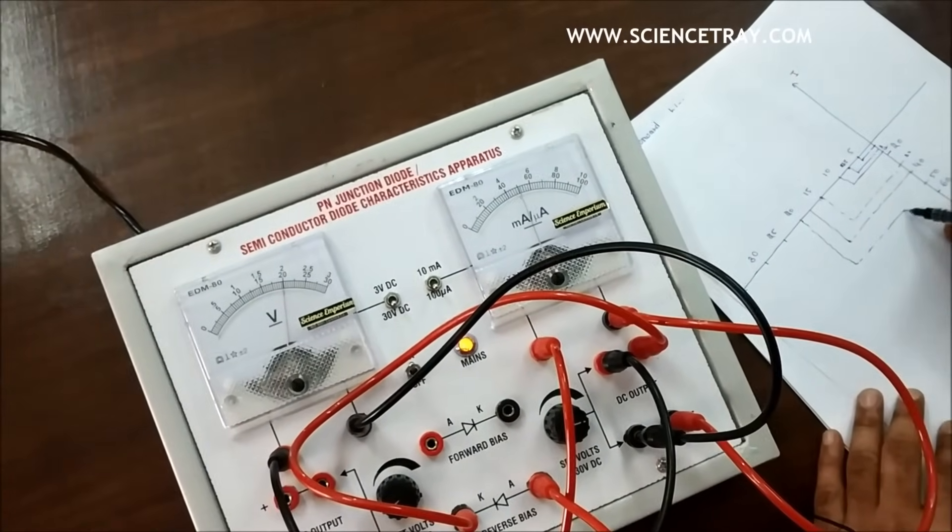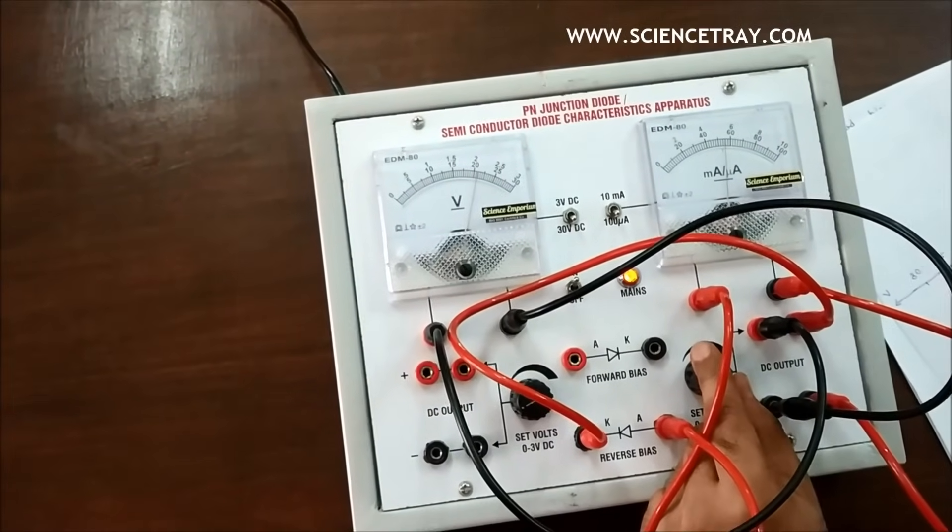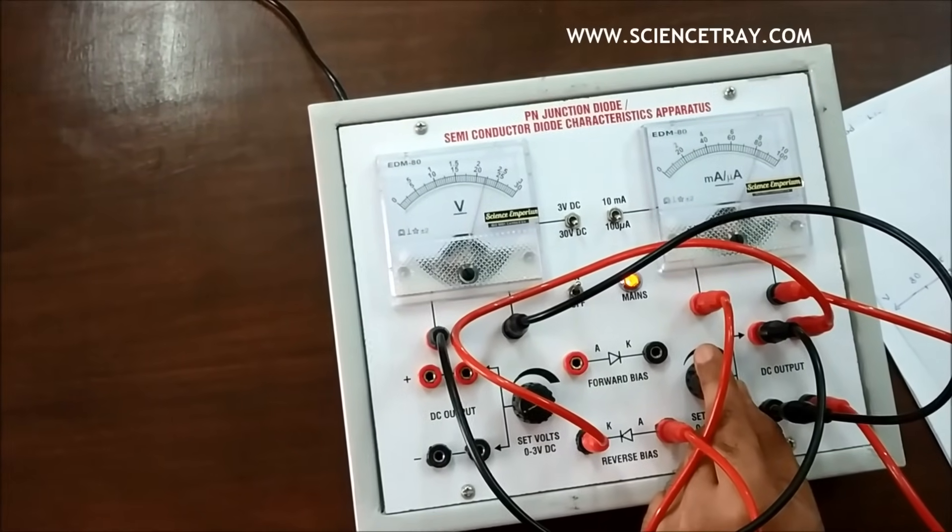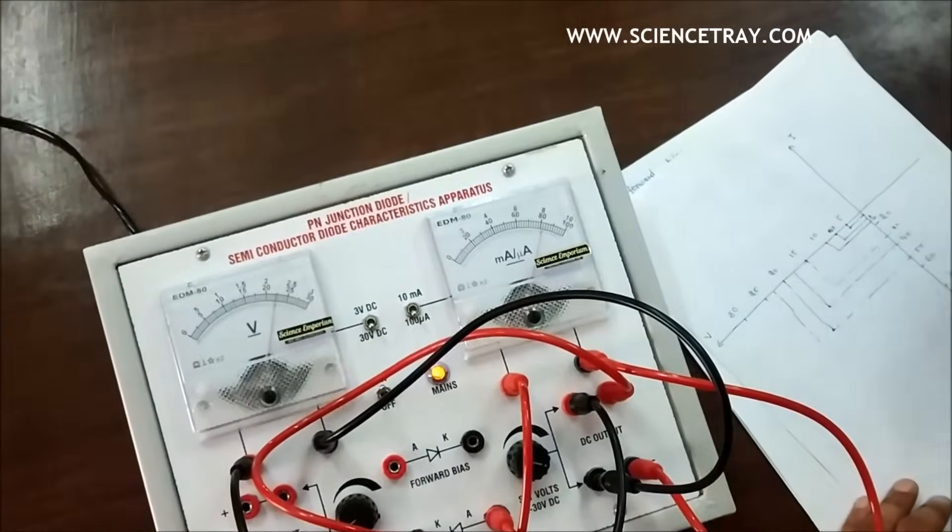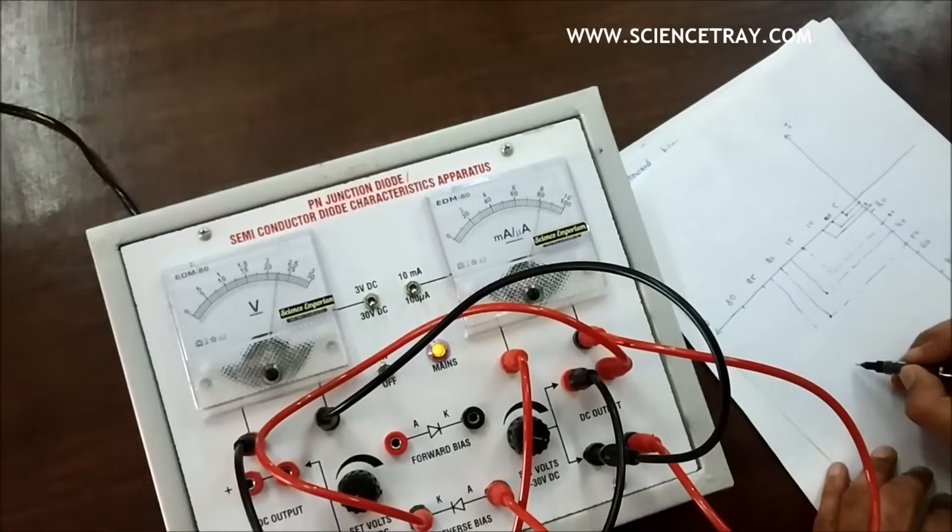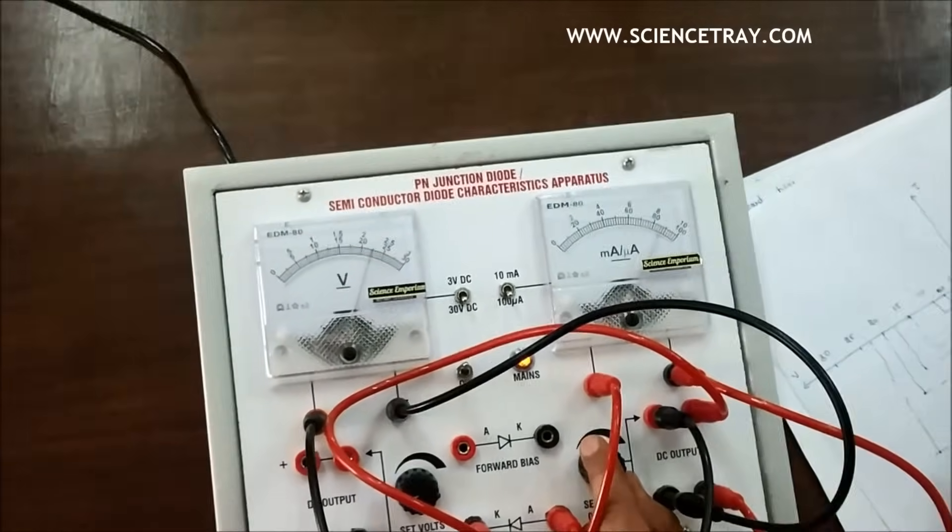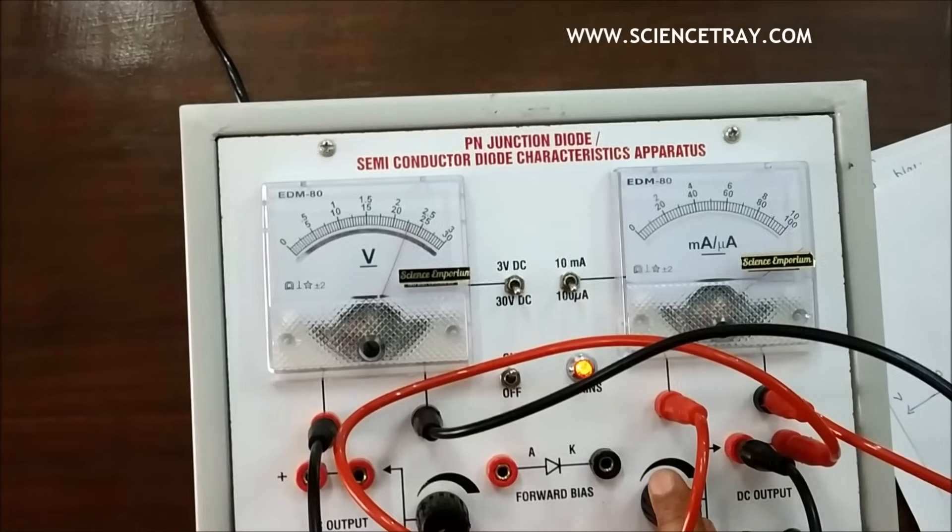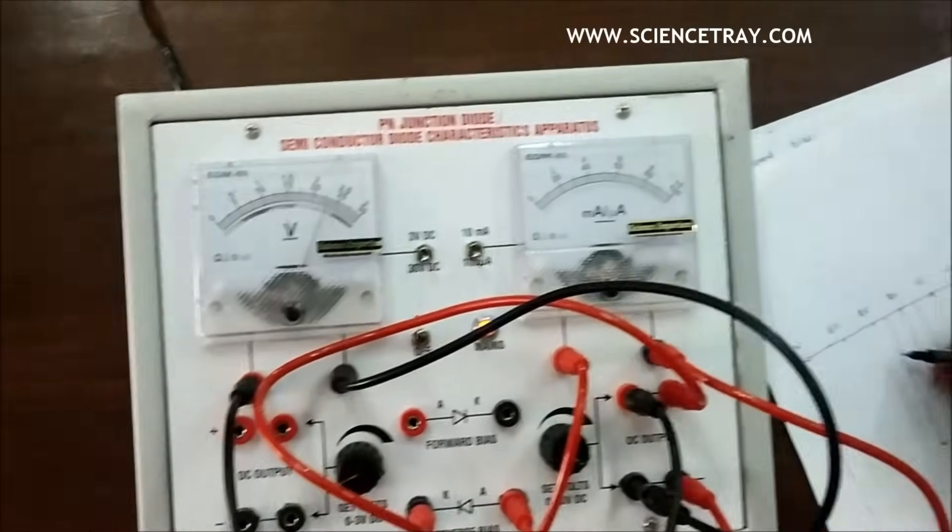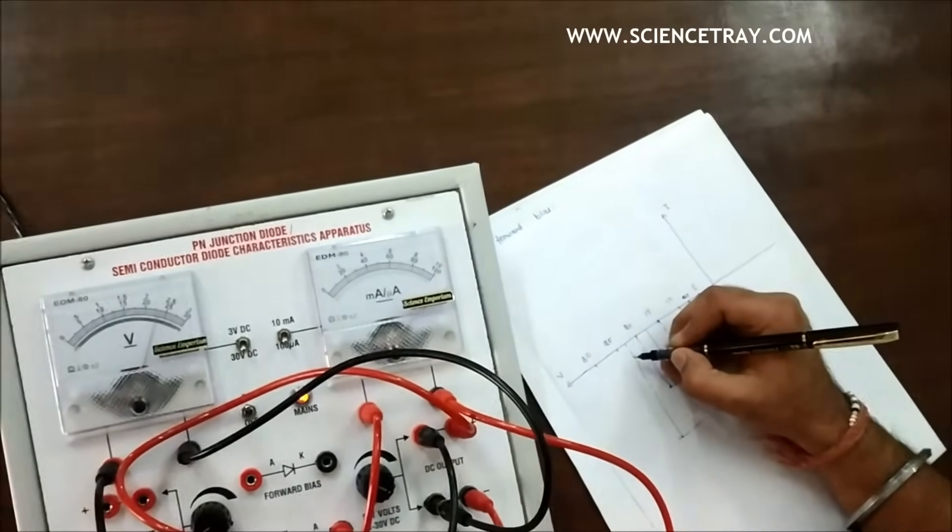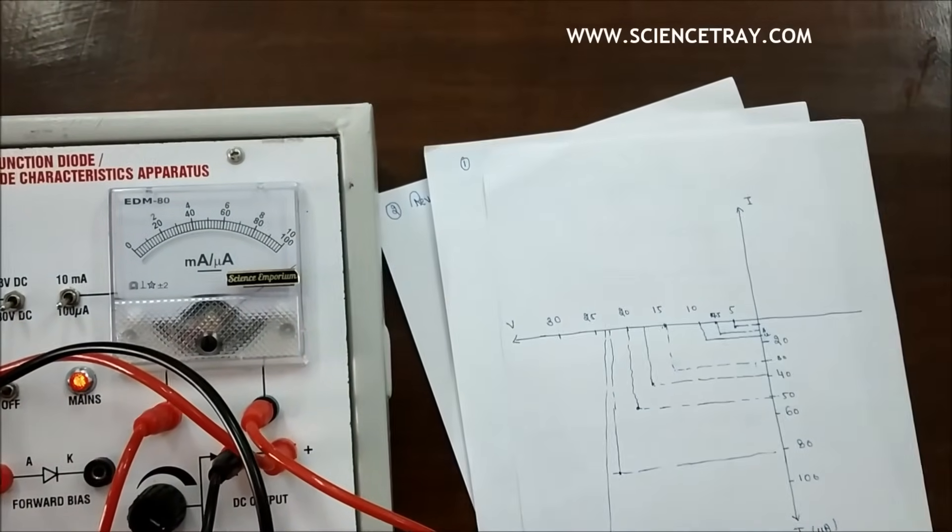At 22.5 volts the current is complete 80 micro ampere. With slight increase of voltage to 25 volts, current is more than 100 micro ampere. With slight increase it reaches even higher. So if you plot the graph, the graph just looks like this. This is our graph where current increases with voltage in reverse bias.